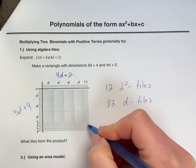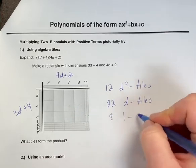And then for the 1s, we have 1, 2, 3, 4, 5, 6, 7, 8. So we have 8 one tiles.